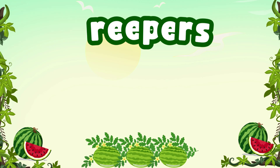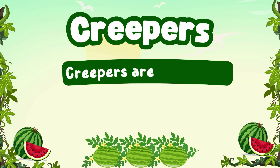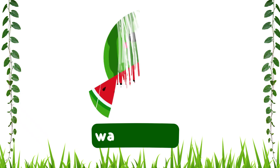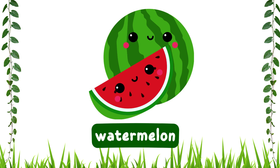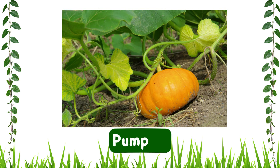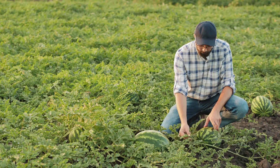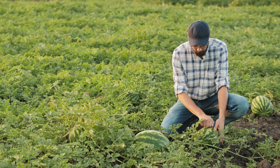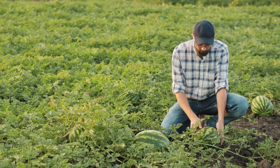Creepers. Creepers have a weak stem. They grow along the ground. Examples are watermelon and pumpkin. Watermelons grow along the ground.